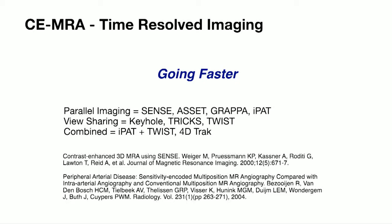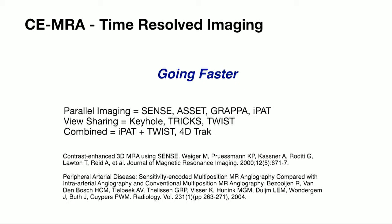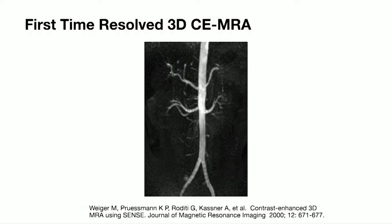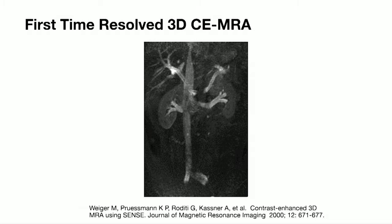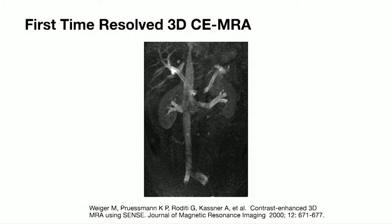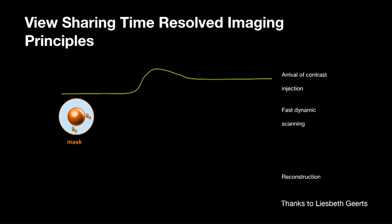The idea of time-resolved imaging is basically going faster using parallel imaging, view sharing, keyhole, SENSE, and GRAPPA. What I believe is the first 3D contrast-enhanced MRA was published in JMRI — Prisman and Veiga came over, hooked up some bits and pieces to our scanner, and injected me. This shows my renal arteries with contrast: a 40-second breath hold giving multiple phases of contrast passage through the renal vasculature, including a pure pre-arterial venous image, using SENSE acceleration and parallel imaging.